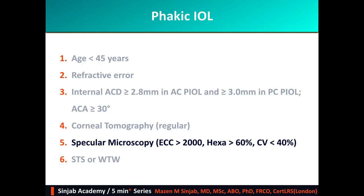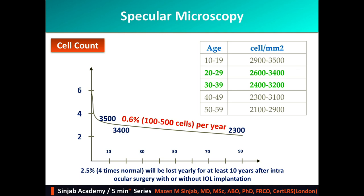The fifth point is specular microscopy. Specular microscopy should be studied in terms of density or cell count, and morphology including hexagonality and polymegethism. Regarding cell count, this diagram shows the normal loss of endothelial cell count with age. At birth, endothelial cell count is just below 6,000 cells per square millimeter. This number drops to around 3,000 during the first decade of life and decreases by 0.6 percent per year thereafter.